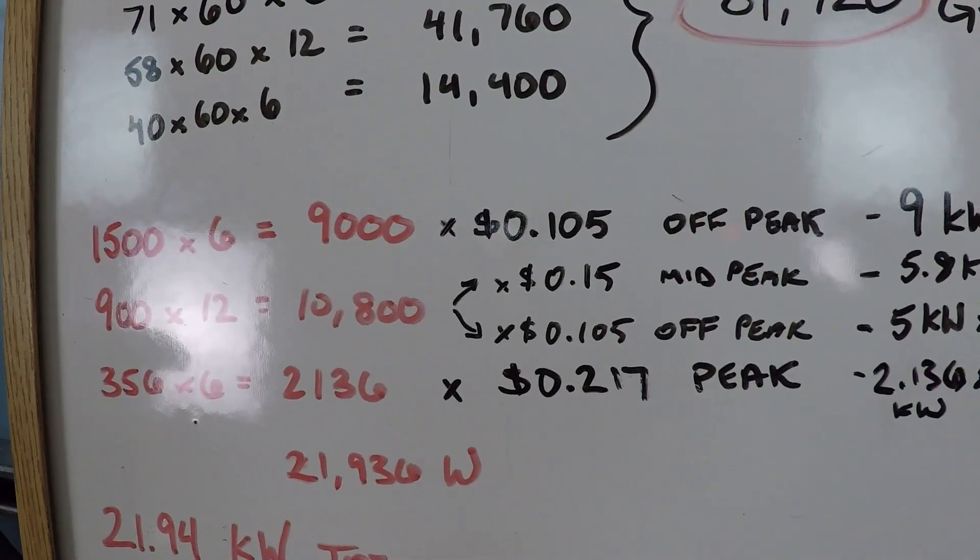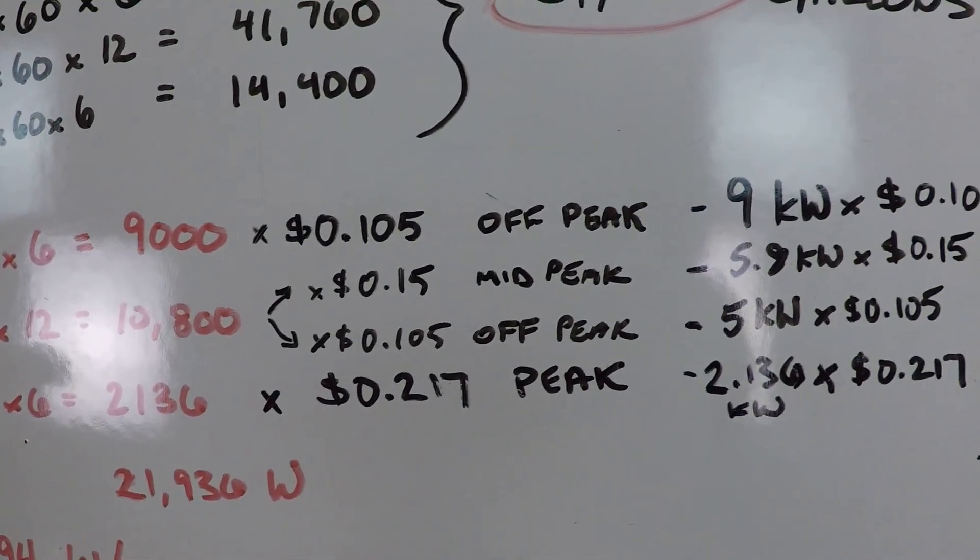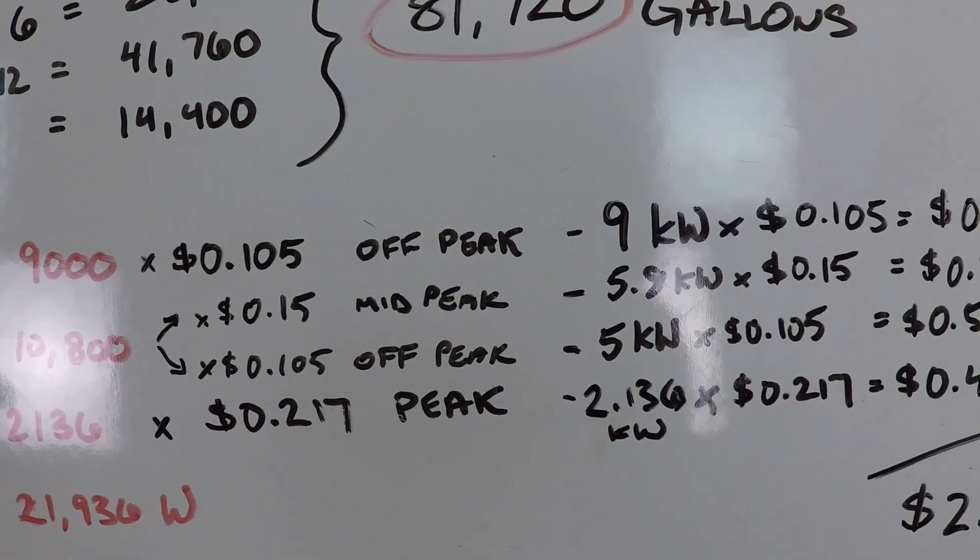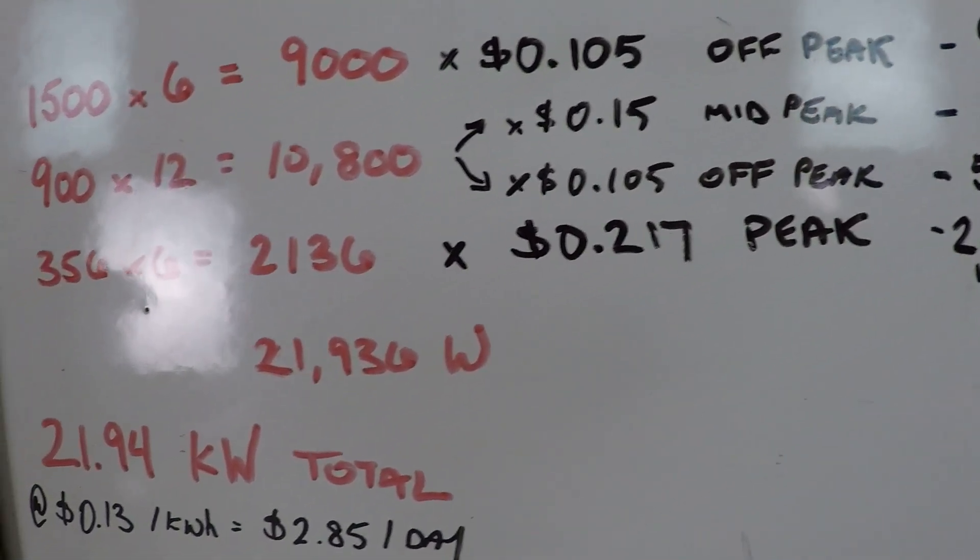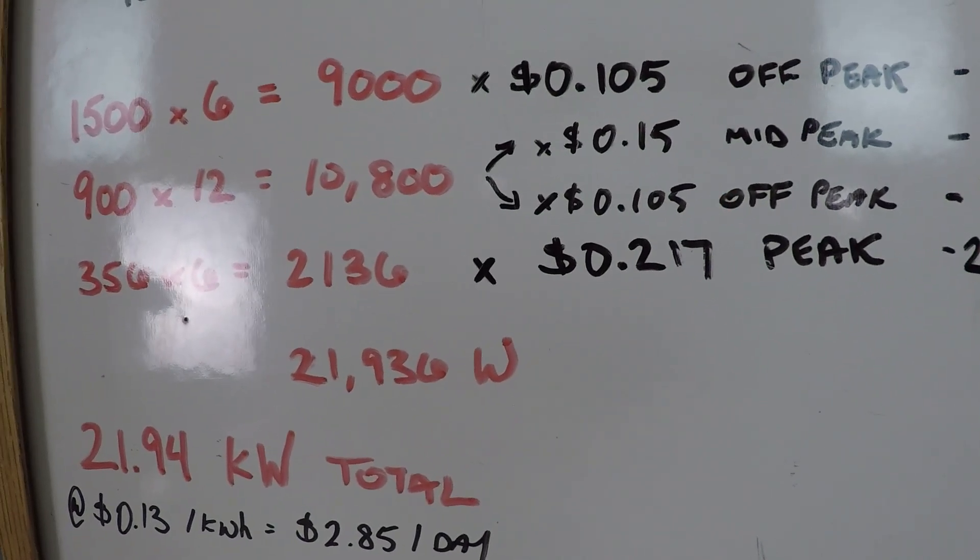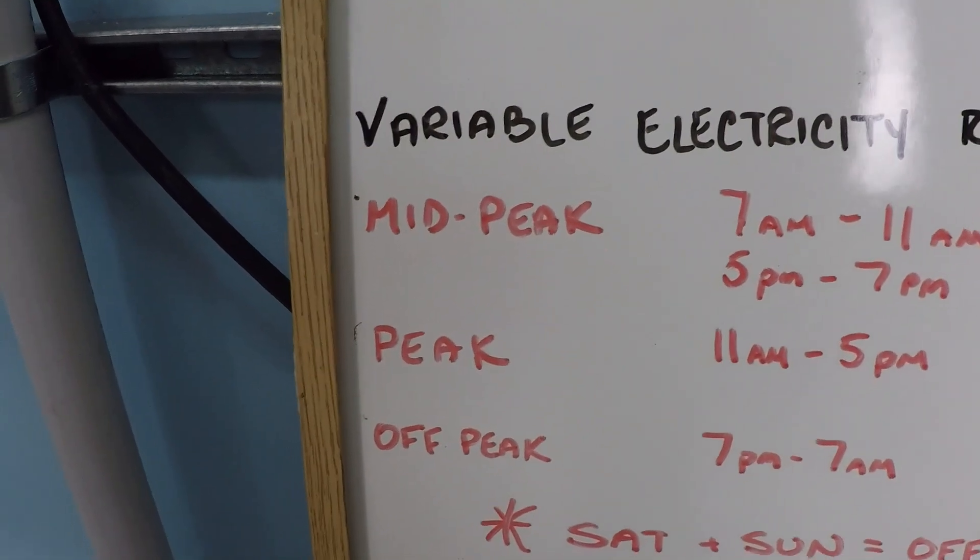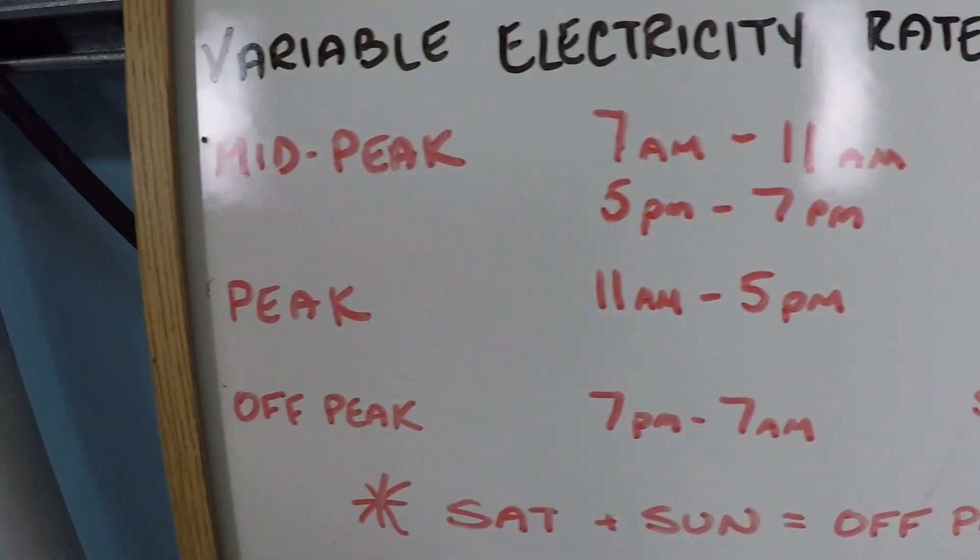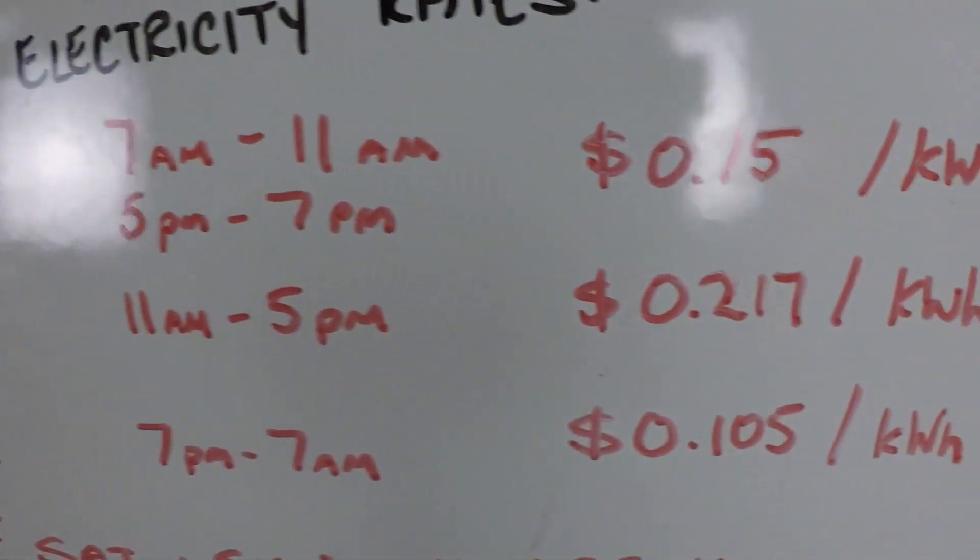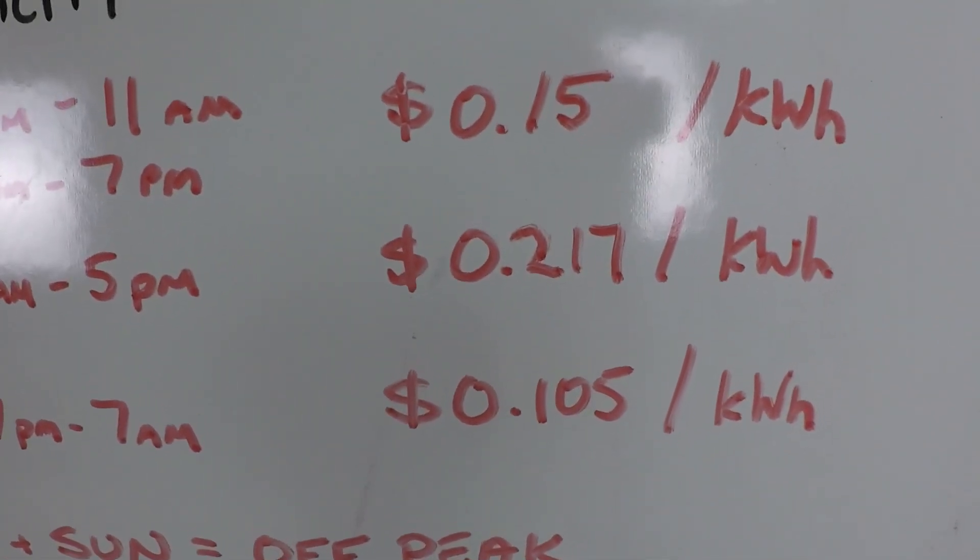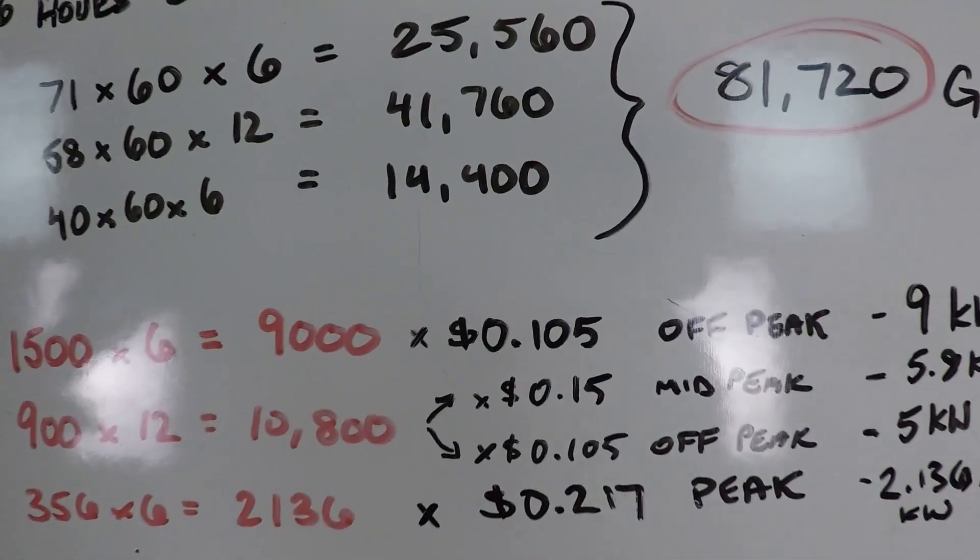Let's go ahead and take a look at the variable rates because that might be interesting. This is a little bit more complex of a calculation as you can see. Basically what we have to do is we account for each of those 21,936 watts in mid-peak, peak, or off-peak hours of operation, because the cost of electricity is different under each of those situations. And so in calculating this out...